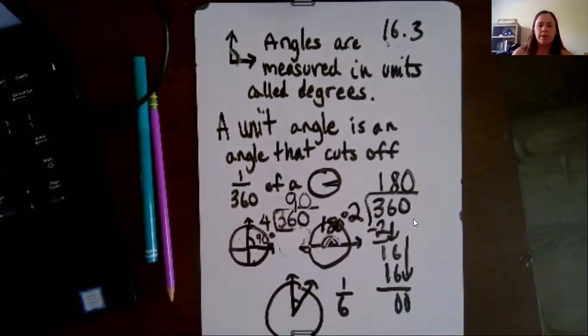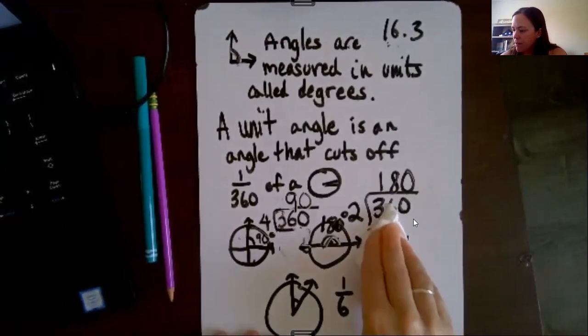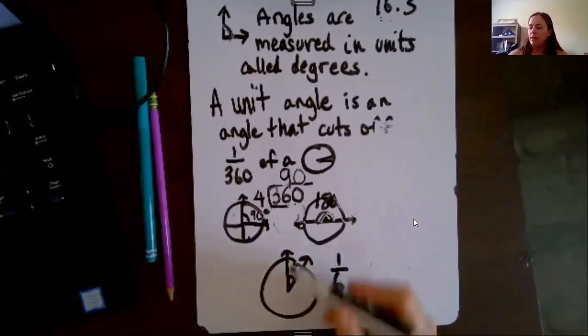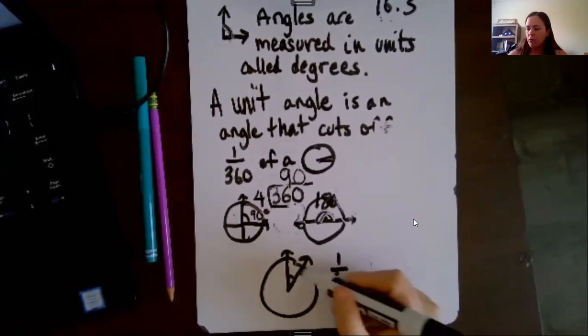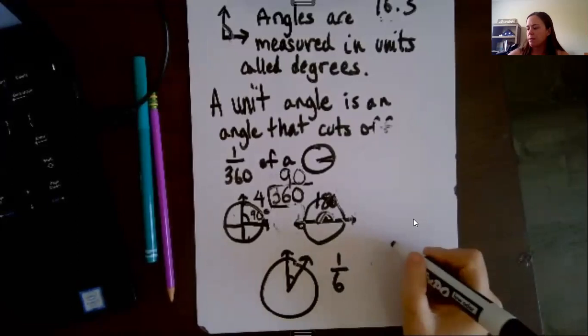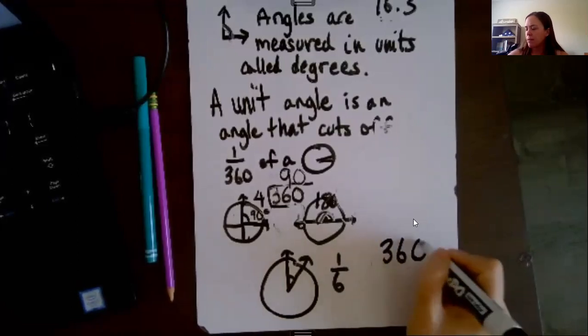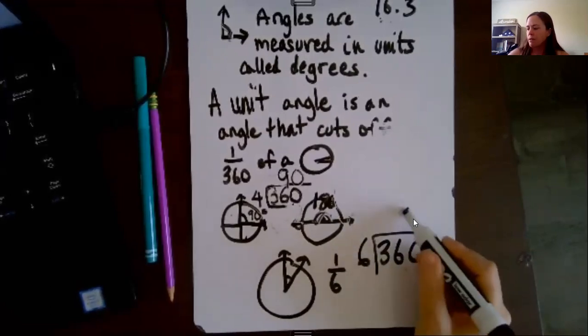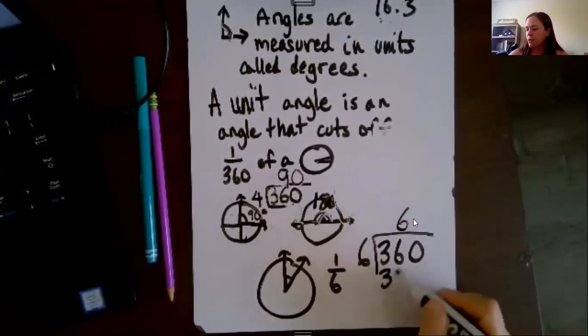Now sometimes you'll see it like this. They'll ask you, what's the angle of one-sixth of this circle? And it's the same thing we just said. 360 divided by 6. 6 goes into 36, 6 times. 6 times 6 is 36.